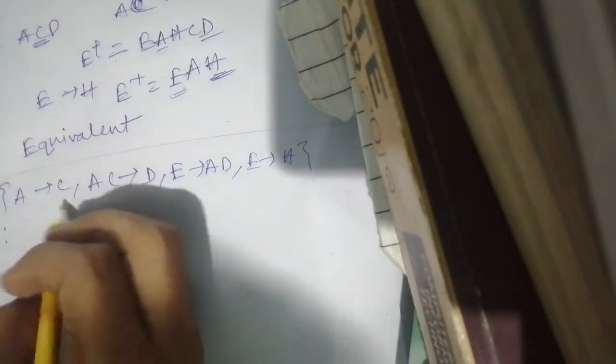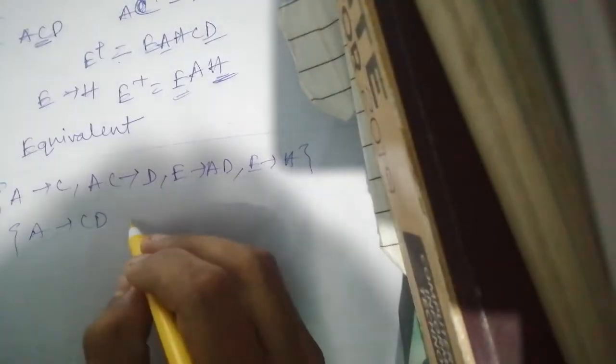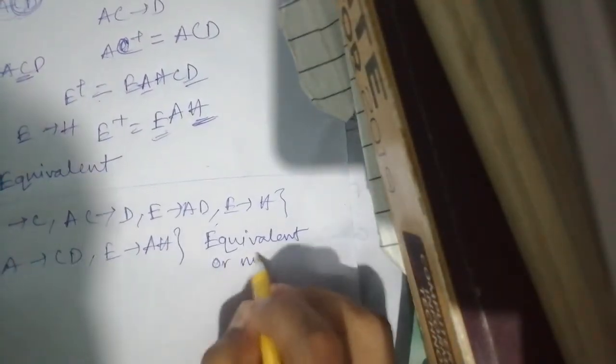Let's take one question. Let F be: A determines AC, AC determines D, E determines AD, and E determines H. And let G be: A determines CD, and E determines H. We need to prove whether these two sets are functionally equivalent or not.